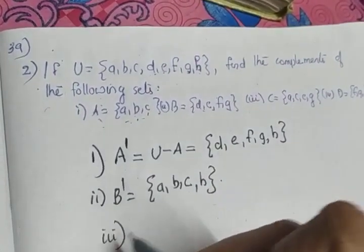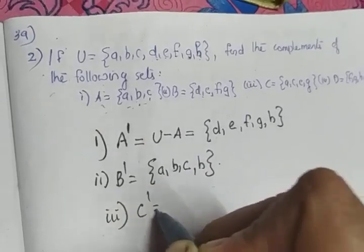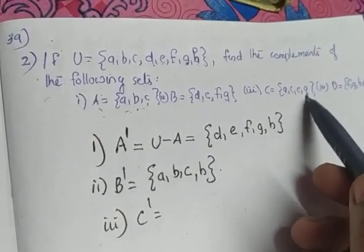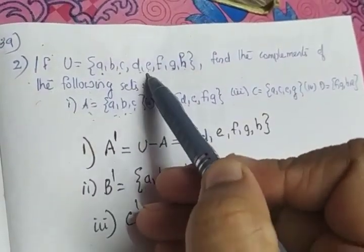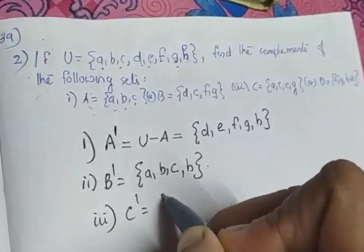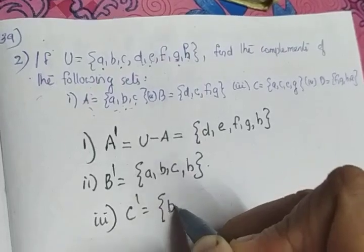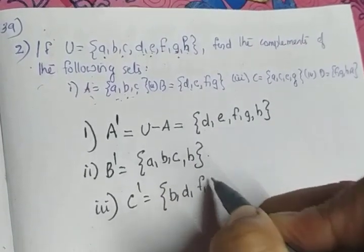Okay. Third part: What is C dash? C is given as {a, c, e, g}. So we remove all those elements: a, c, e, and g. So the remaining elements, C dash, will be {b, d, f, h}.